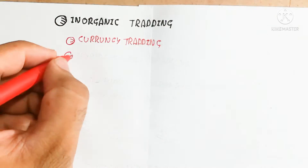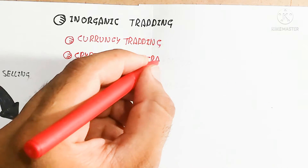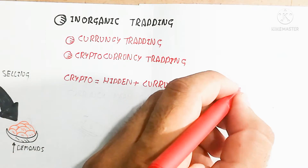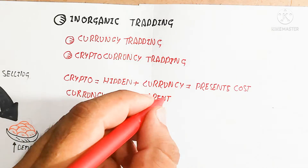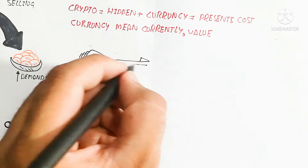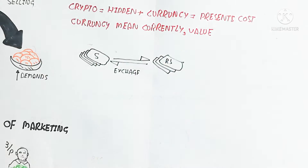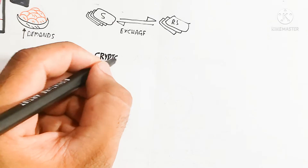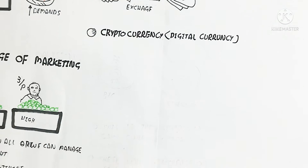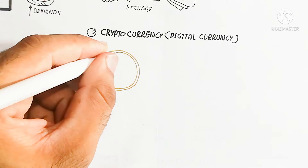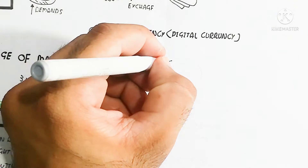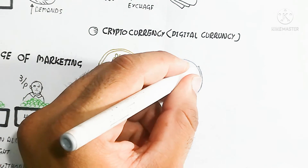This coin currency is basically inorganic trading. Let's understand inorganic trading, which is currency trading or cryptocurrency trading. Currency means the current value, while crypto means hidden currency — so cryptocurrency means hidden current value. Currency exchange is dollar into rupees and rupees into dollar, based on scarcity and cost changes. Cryptocurrency is digital currency represented in numbers and logos — for example Bitcoin, Ethereum, and Ripple — all part of the blockchain system.